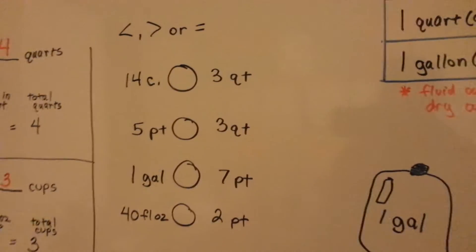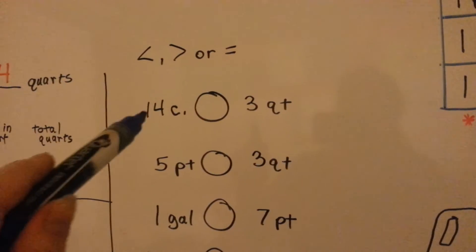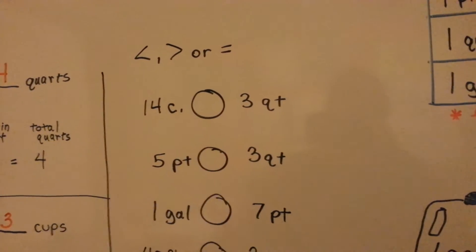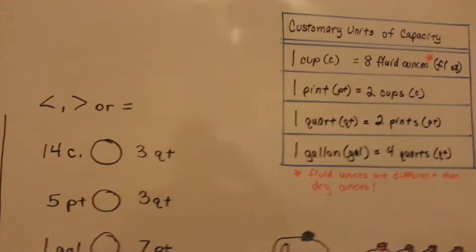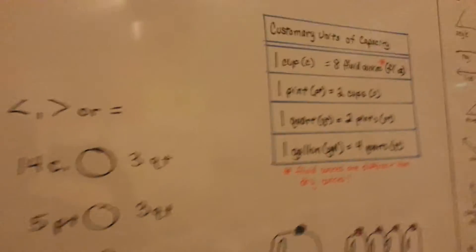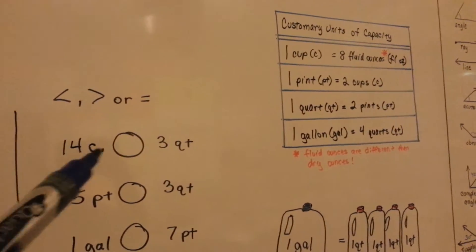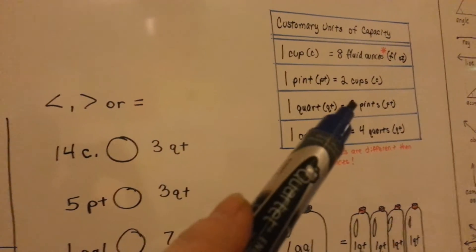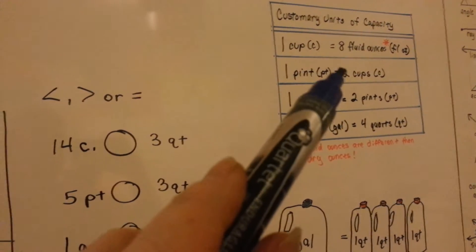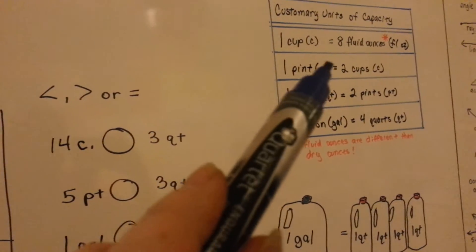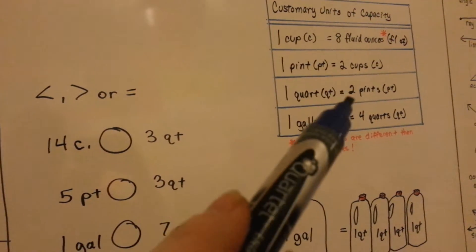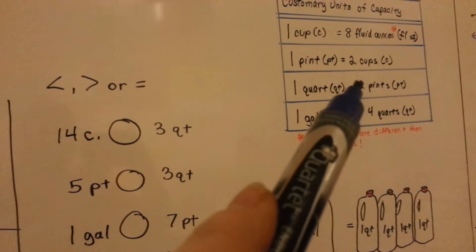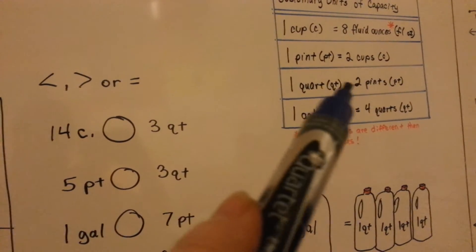Let's see if we can do less than, greater than, and equal to. Which one would be greater: 14 cups or 3 quarts? How many cups are in a quart? Well, there are 2 pints in a quart, and each pint has 2 cups. If 1 pint has 2 cups, then 2 pints must have 4 cups. So, how many cups are in a quart?